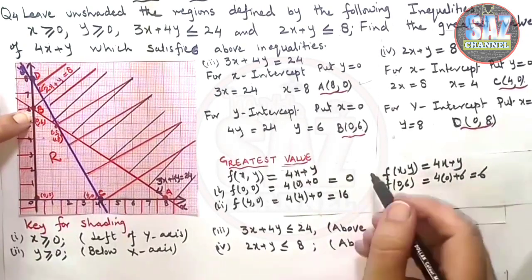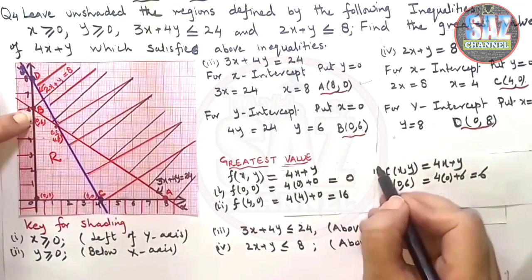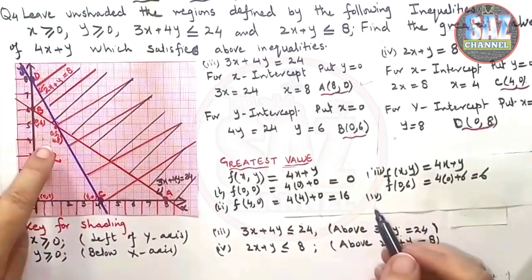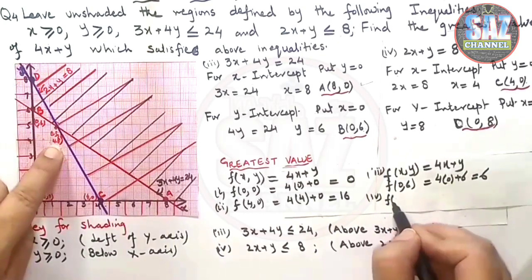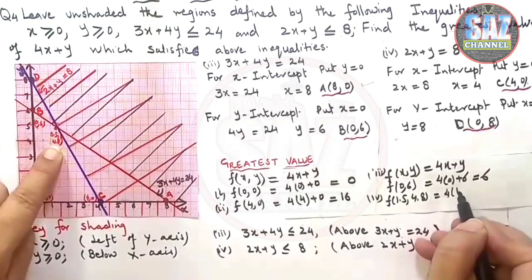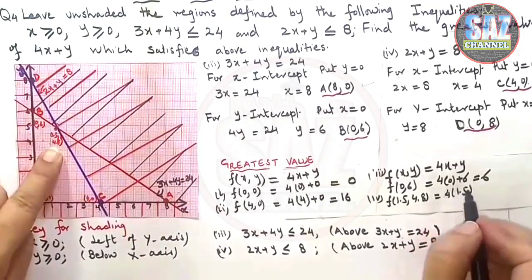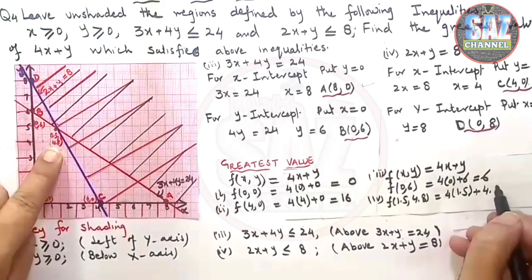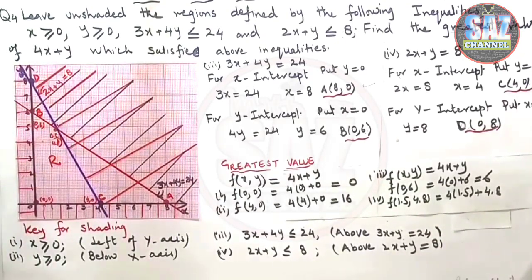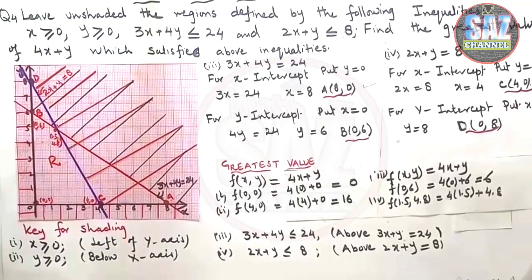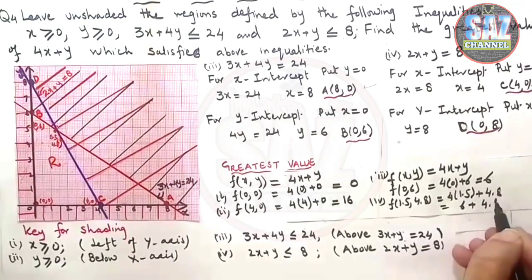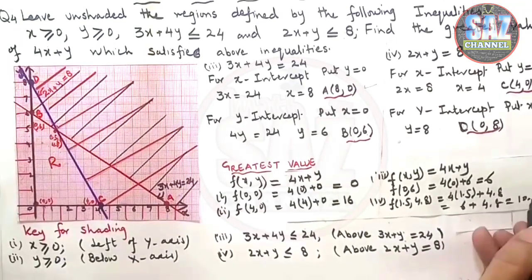(0, 6) means I have to make my x = 0 and y = 6 and answer comes 4 times 0 is 0 and 6. This is my third point and fourth point that is (1.5, 4.8). 4 into 1.5 plus 4.8. 4 times 1.5 is 6. So that is 1.5 multiplied by 4. Yes, this is 6. 6 plus 4.8 and it is 10.8.